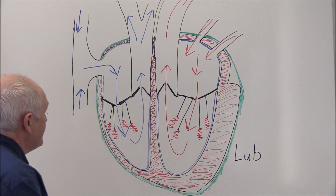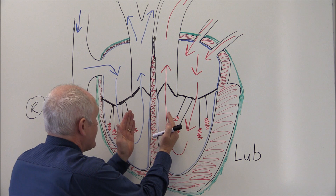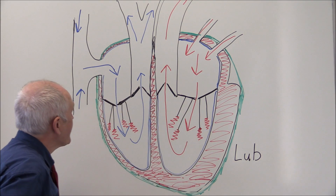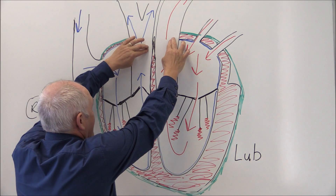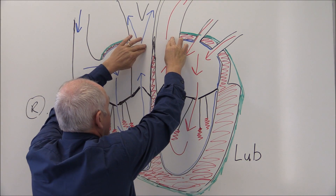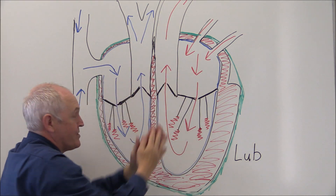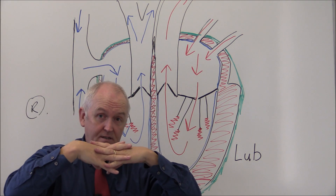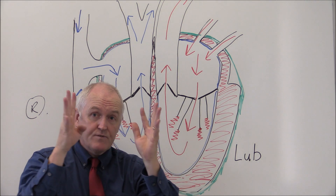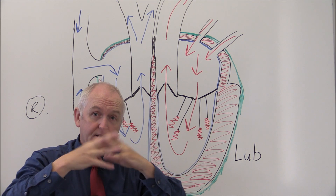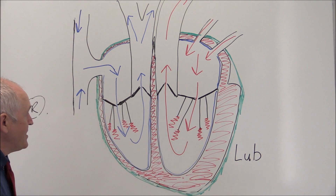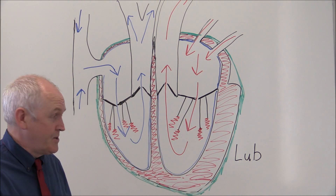The ventricles contract, blood goes up into the large arteries, and then the blood tries to get back down from the arteries back into the ventricles. As that blood tries to get back down, it shuts the arterial semilunar valves. And when those valves slam shut, they make a noise - and that noise we normally refer to as a dub.